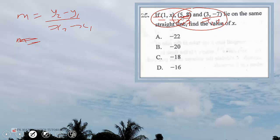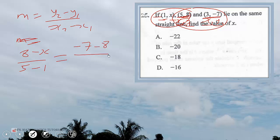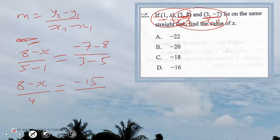For the second pair of points (5, 8) and (3, -7): gradient equals negative 7 minus 8 over 3 minus 5. So we get 8 minus x over 4 equals negative 15 over negative 2. Setting the two gradients equal and cross multiplying: the negative 2 and 4 interact, and we get 8 minus x equals 15 times 2, which is 30.